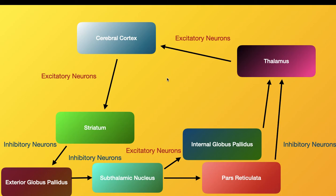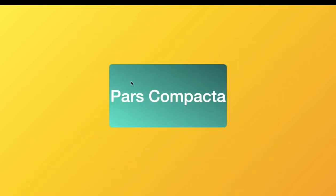This is all regulated by the pars compacta. The direct pathway allows you to move your leg, while the indirect pathway is saying you should not move the other leg — because if you move that leg, you'd fall. So the indirect pathway prevents unwanted movements from happening.